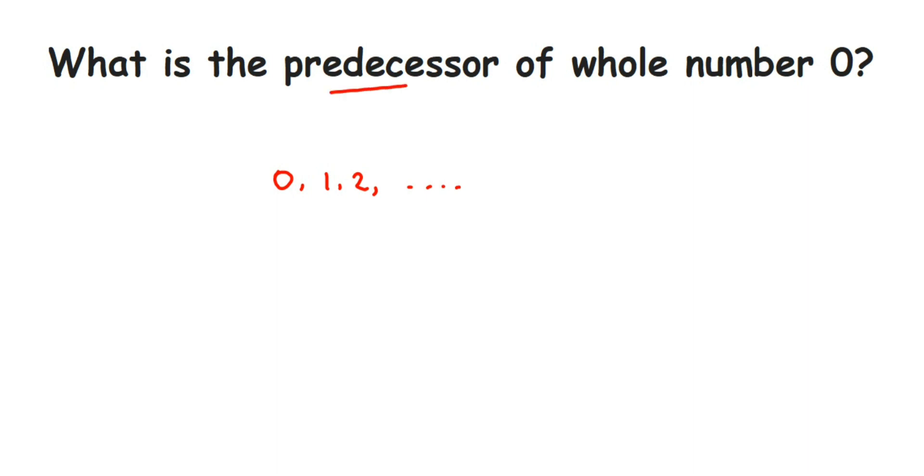Whole numbers start from zero and we don't have any number before that. There are negative numbers, but those come under integers, not whole numbers. So there's no predecessor for zero in whole numbers.